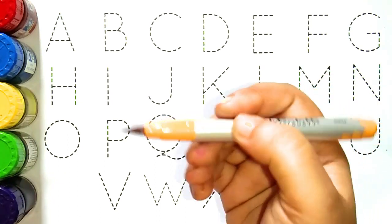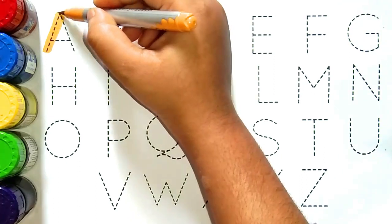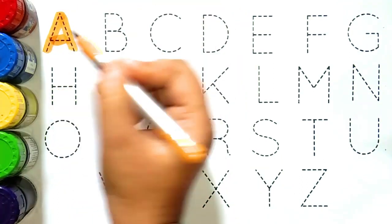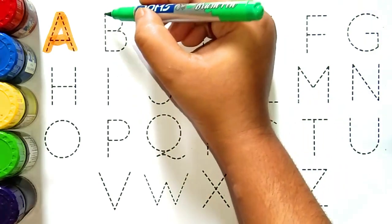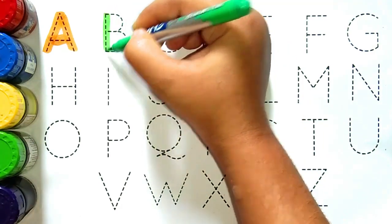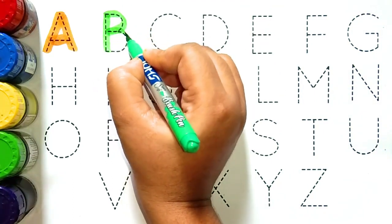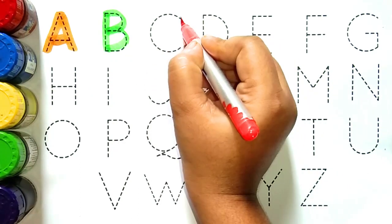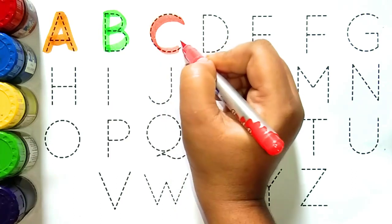Deep yellow color. A, A for ant. A for kya hootahe bacho, A for hotahe ant. Light green color. B, B for bee. B for kya hootahe, B for hotahe bee.